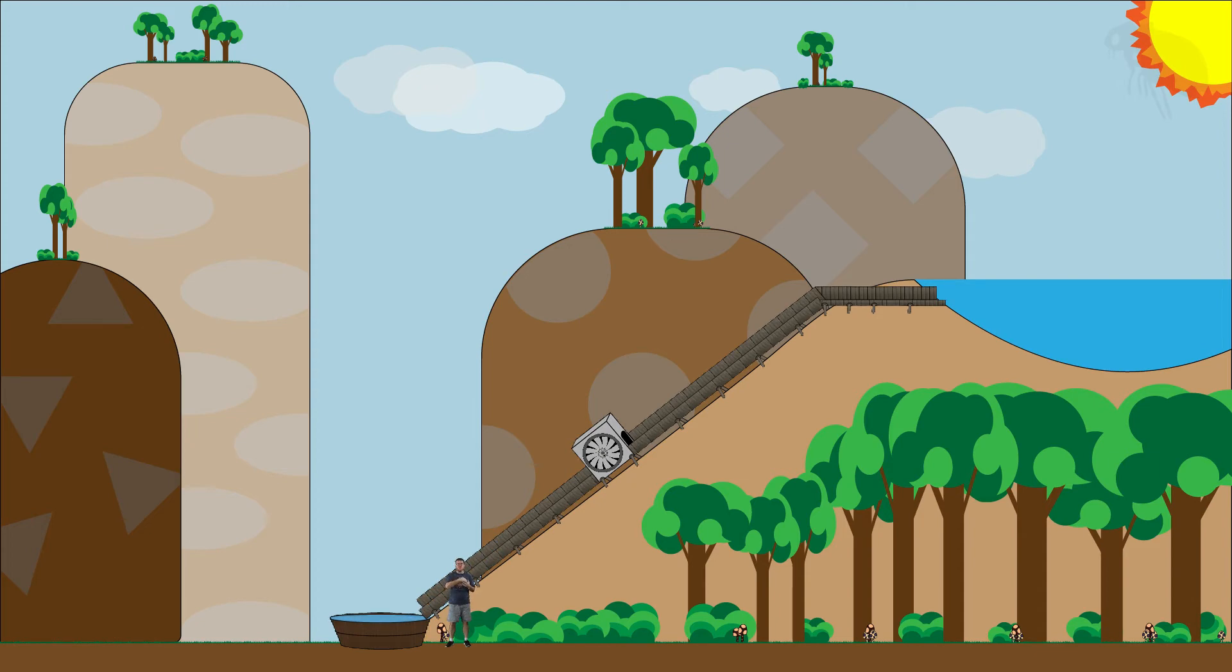The problem is, once the water gets to the bottom of the hill here, it can't get itself back up, and once we drain the pond enough, we can't keep this going any longer. What we need is a way to keep the water at the top of the hill so that it can constantly flow through the generator.